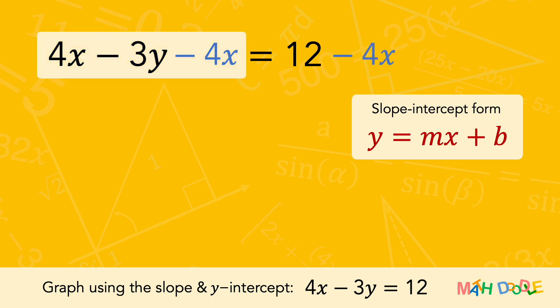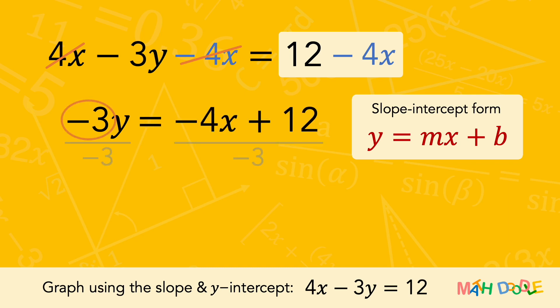Then, the left side of the equation is simplified to minus 3y. And let's rearrange the right side of the equation. Now, we are going to eliminate minus 3 in front of y by dividing both sides by minus 3. Then, this can be simplified to 4 thirds x minus 4.